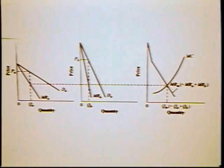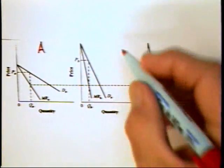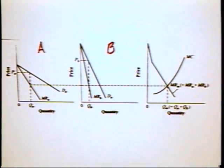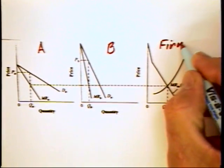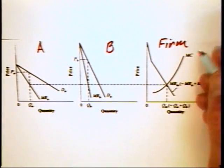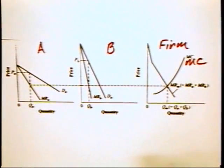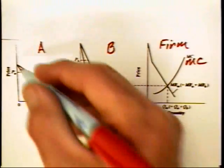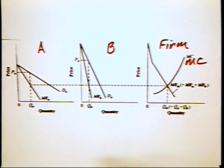We can deal with these issues in terms of a graph that comes directly out of the textbook. Here we have two markets — market A and market B — and on the right hand side we have a graph for the firm with the firm's marginal cost curve. The demand in market A is much more elastic than the demand in market B.